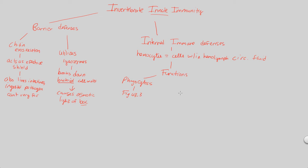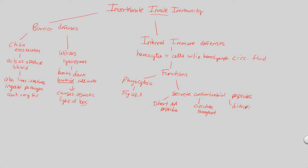Of more interest when looking at invertebrate innate immunity is that, in addition to being phagocytes, hemocytes also secrete antimicrobial peptides — molecules that destroy micro-living things like bacteria. These are short amino acid chains that circulate throughout the hemolymph, scavenging for foreign invaders. Their job, like much of immunity, is to disrupt the foreign pathogen's plasma membrane, destroying the organism.